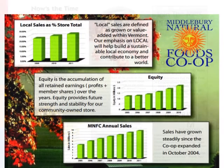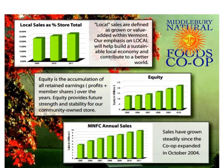Here's a great example of an annual report from the Middlebury Natural Foods Co-op. The very first bit of data they show in this annual report is a chart showing how their local sales have changed over time. Throughout the year, this value is something they're including in lots of other communications to their members.